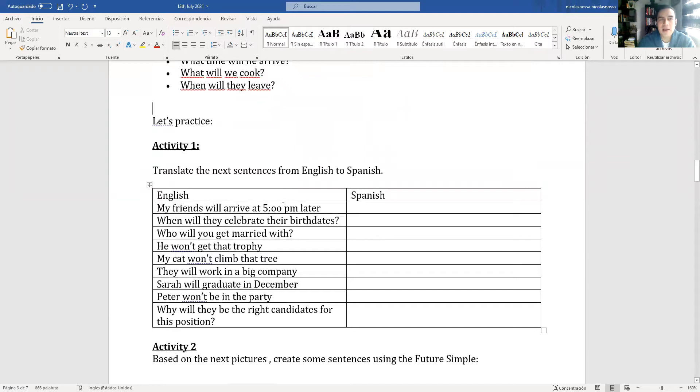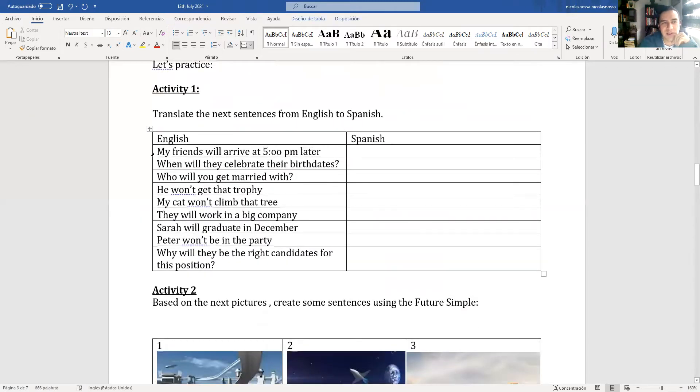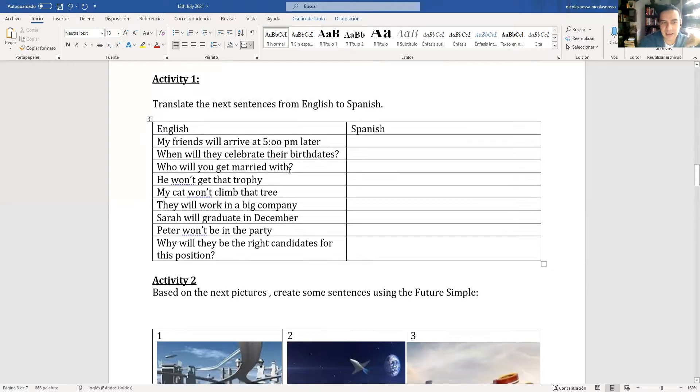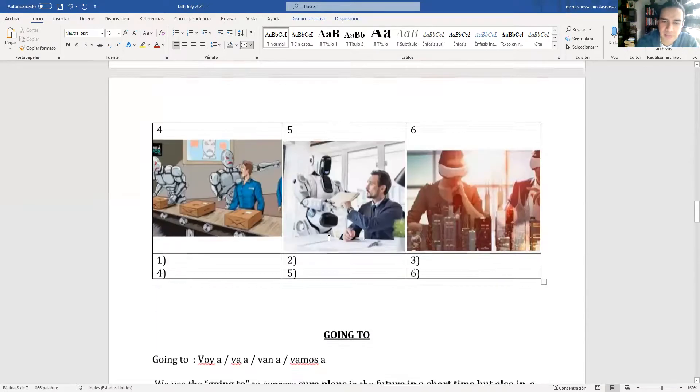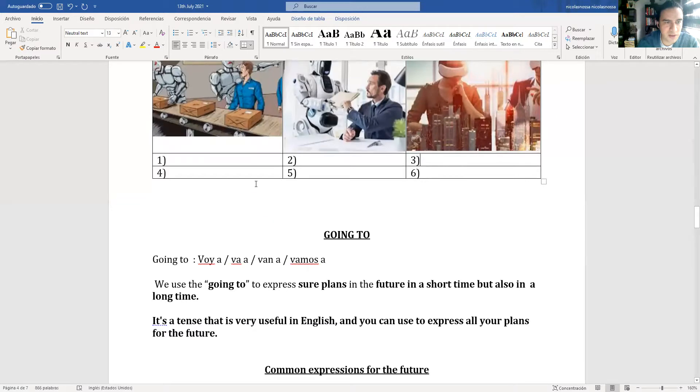Vamos a hacer este ejercicio, vamos a traducir estas oraciones de inglés a español. Luego vamos teniendo una fotito acá, entonces con base en la foto creen una oración en futuro simple: sujeto, modal will, verbo, complemento. Les dejo el espacio en uno, dos, tres, cuatro, cinco, seis minutos.